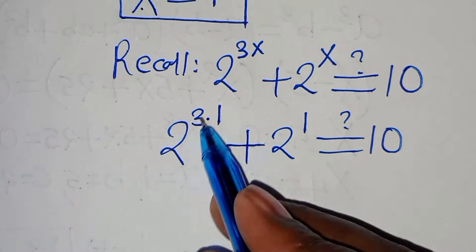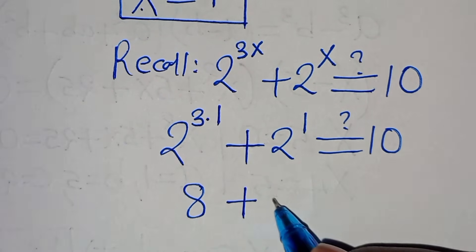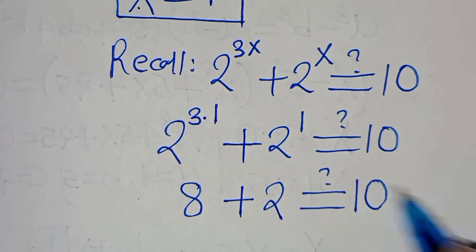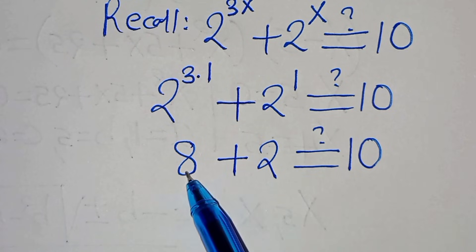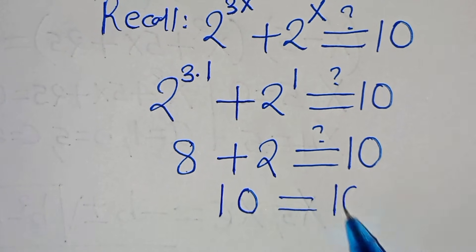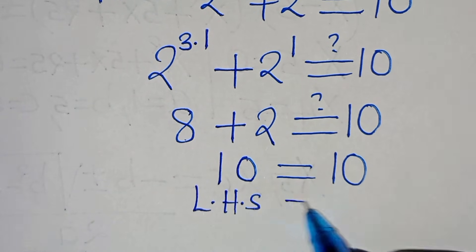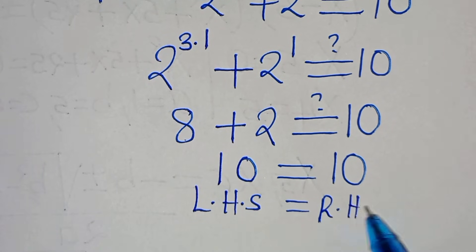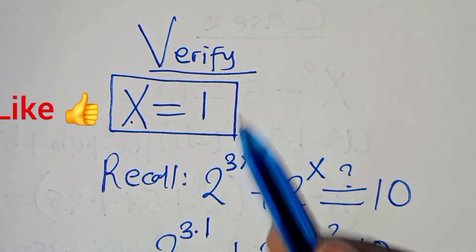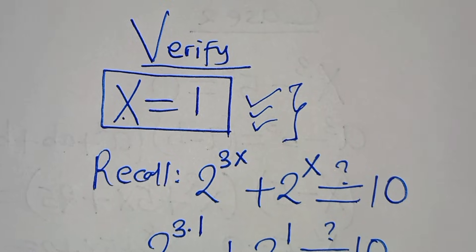So 2 to the power of 3 is 8, plus 2 to the power of 1 which is 2, and 8 plus 2 equals 10, which equals 10. The left-hand side equals the right-hand side, confirming that x equals 1 satisfies the equation.